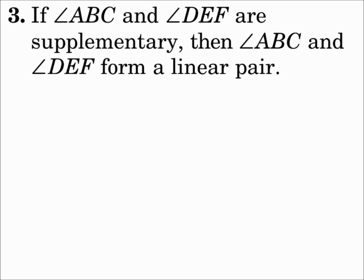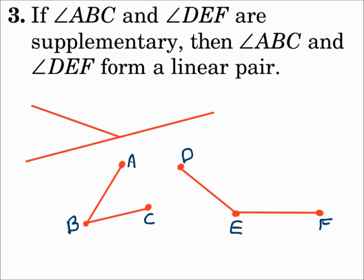Number 3: If angle ABC and angle DEF are supplementary, then angle ABC and angle DEF form a linear pair. Well, I can see how two supplementary angles would form a linear pair, but is it possible to show how they wouldn't? What about this? What if there's two angles? Angle ABC has a measure of 50, angle DEF has a measure of 130. Those are definitely supplementary because they add up to 180, but they're not together to form a linear pair. So there's a counterexample. This conjecture is false.